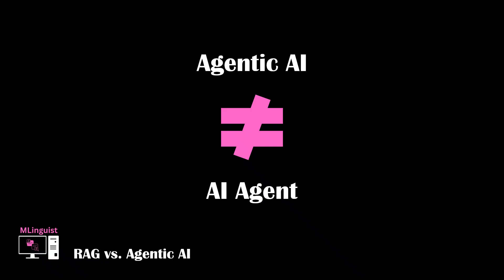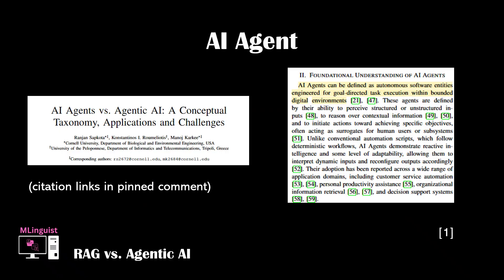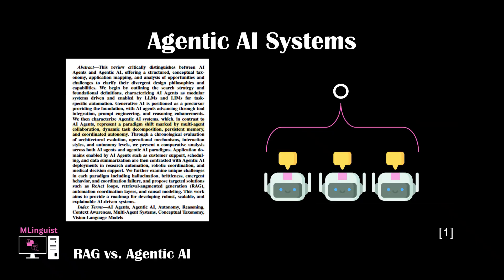Agentic AI as a concept is different from an AI agent. Simply put, agentic AI involves multi-agent collaboration, dynamic task decomposition, persistent memory, and orchestrated autonomy. An AI agent, according to this paper, is defined as an autonomous software entity engineered for goal-directed task execution within bounded digital environments — essentially a specialist in one task that works autonomously with minimal human intervention. Agentic AI systems, on the other hand, are composed of multiple specialized agents that coordinate, communicate, and dynamically allocate subtasks within a broader workflow to achieve a common goal. They can break complex tasks down into smaller ones and decide which sub-agent would best suit a particular task.